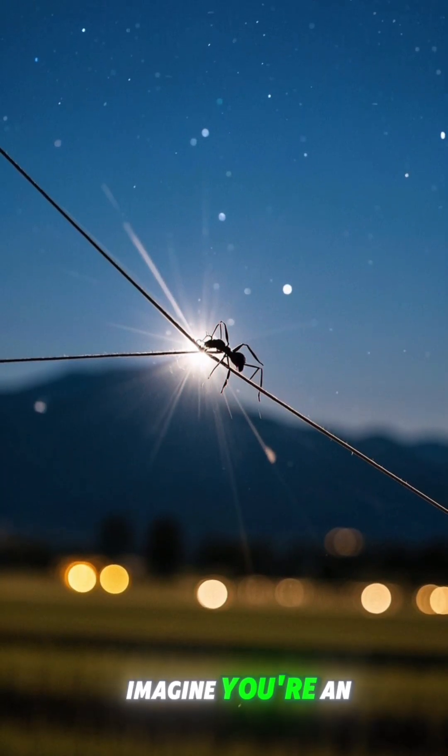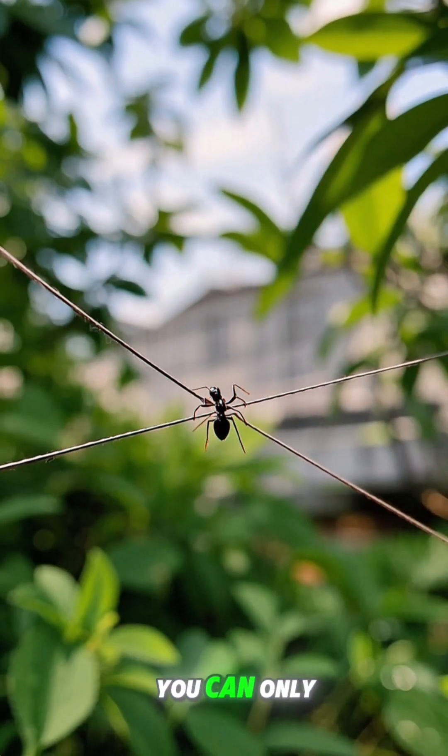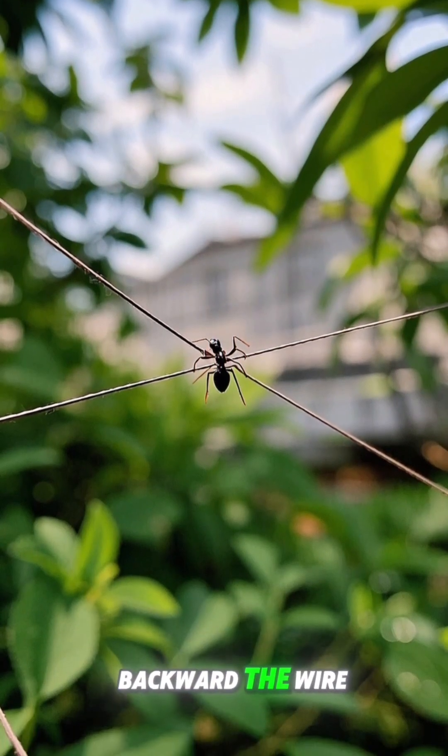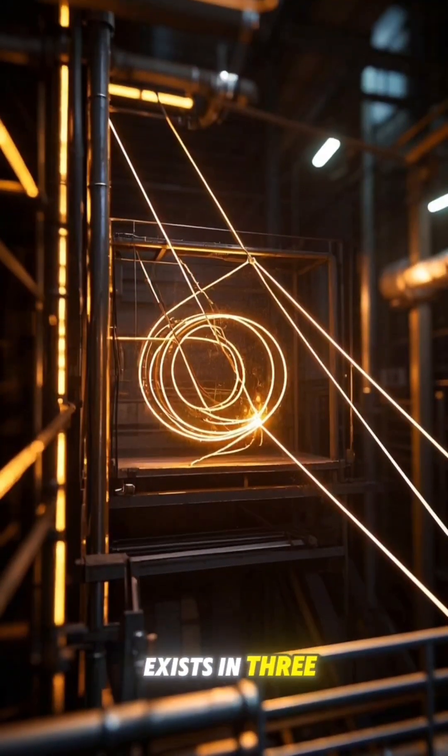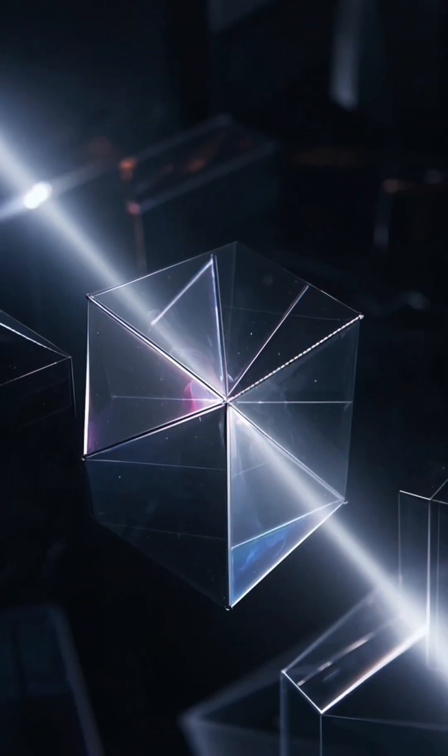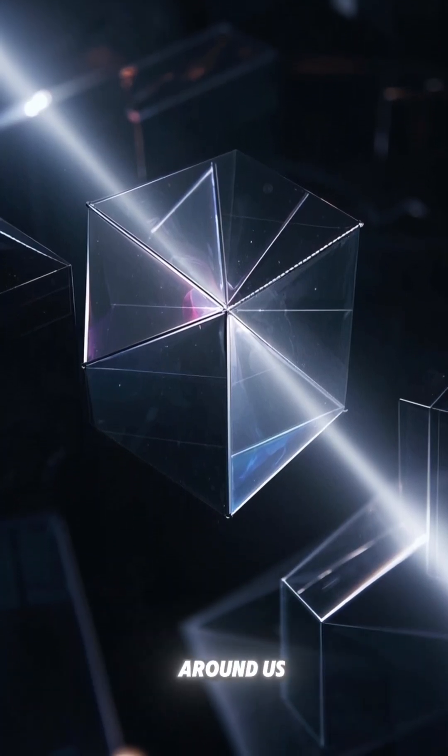Think about it this way. Imagine you're an ant walking along a thin wire. From your perspective, you can only move forward or backward. The wire appears one-dimensional, but we can see the wire exists in three dimensions. Similarly, we might be limited in perceiving higher dimensions that actually exist all around us.